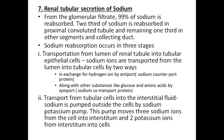First, transportation from the lumen of the renal tubule into tubular epithelial cells. Sodium ions are transported from the lumen into the tubular cells by two ways: in exchange for hydrogen ions by antiport (i.e., sodium counter-transport protein), and along with other substances like glucose and amino acids by symport (i.e., sodium co-transport protein).